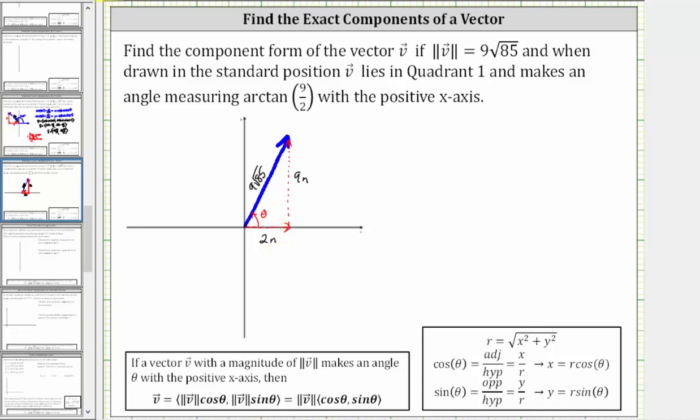We can do this by applying the Pythagorean theorem, because we do have a right triangle. The Pythagorean theorem is c² = a² + b². c² is the square of the hypotenuse, which is the square of 9√85. And a² + b² is the sum of the squares of the legs. So we have (2n)² + (9n)².